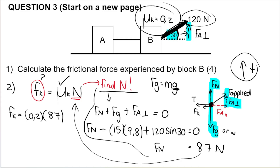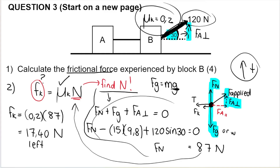They didn't say magnitude, so this is an important teacher tip: if they don't say magnitude, you must give a direction. Friction will be to the left, or in the negative direction, or in the opposite direction of motion.